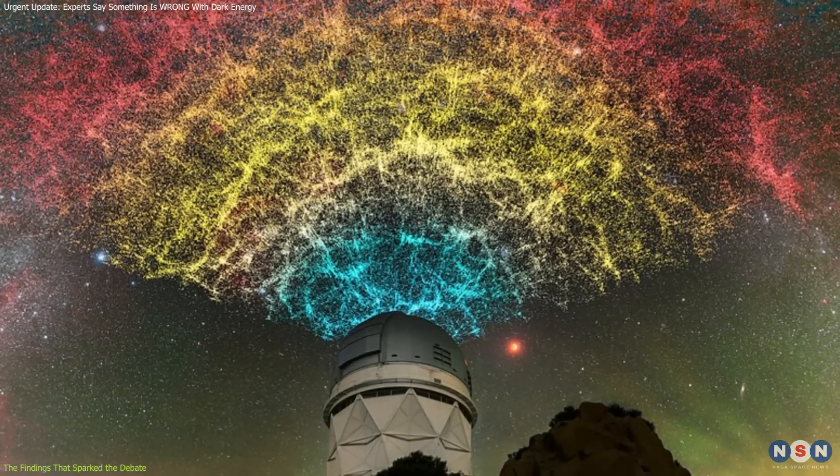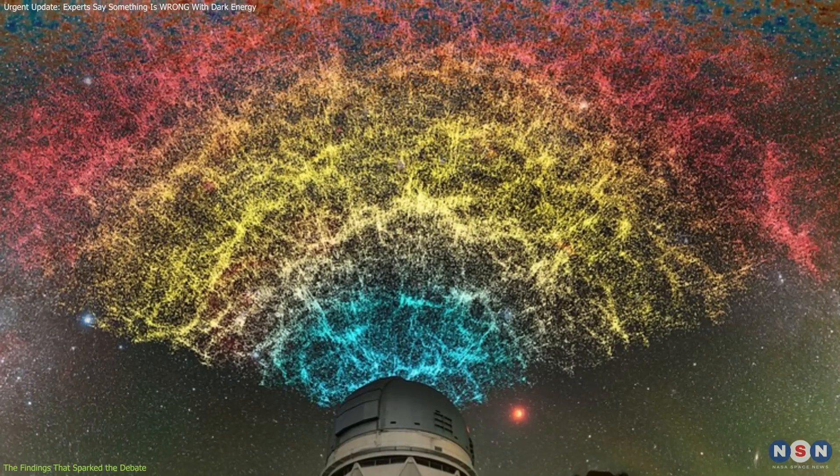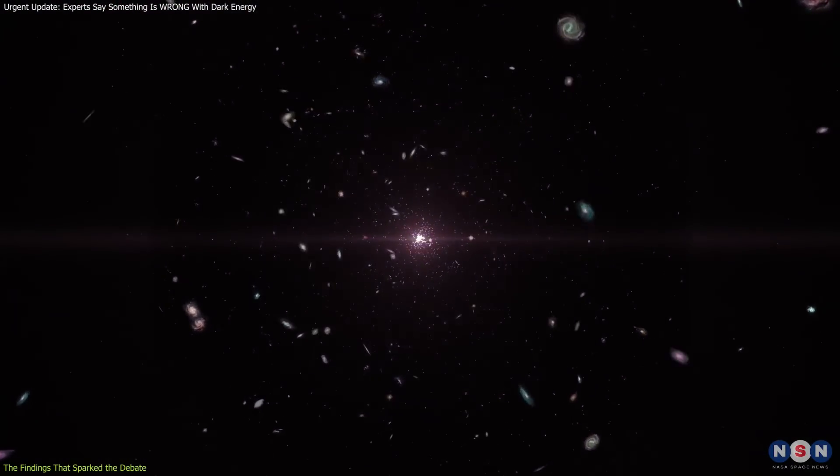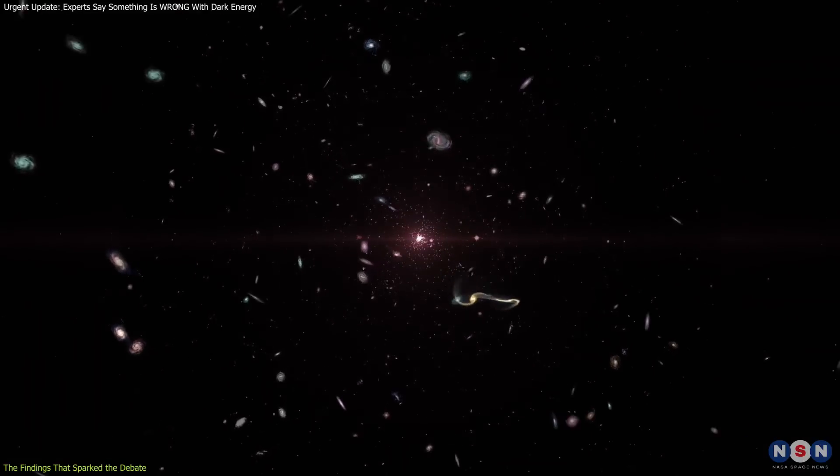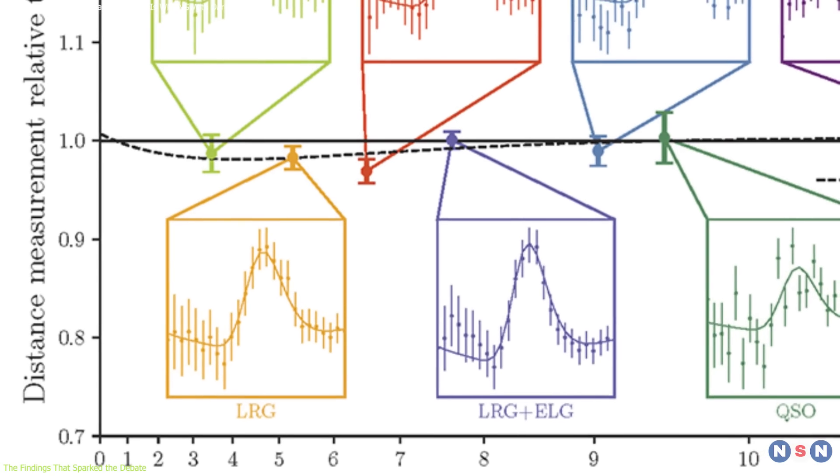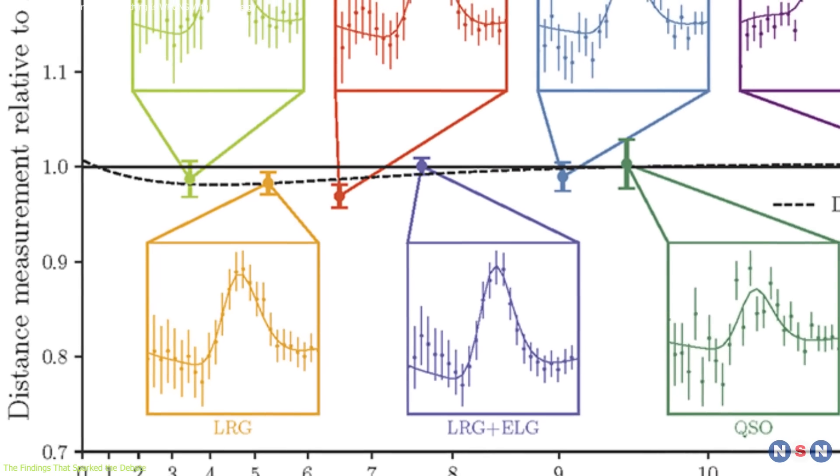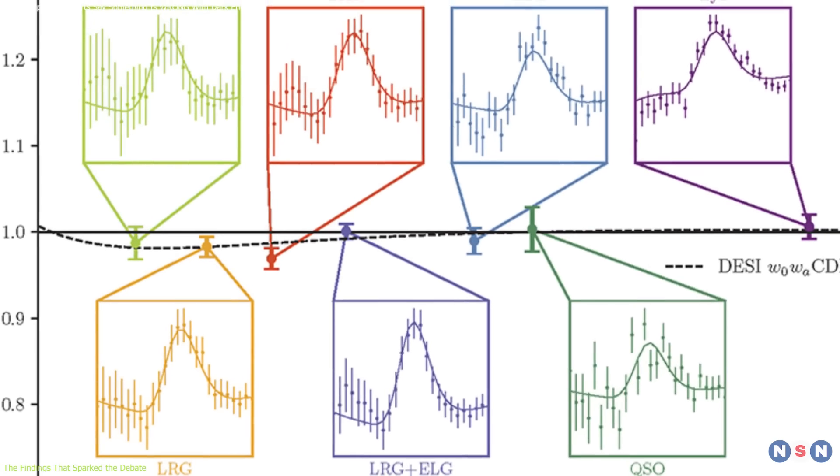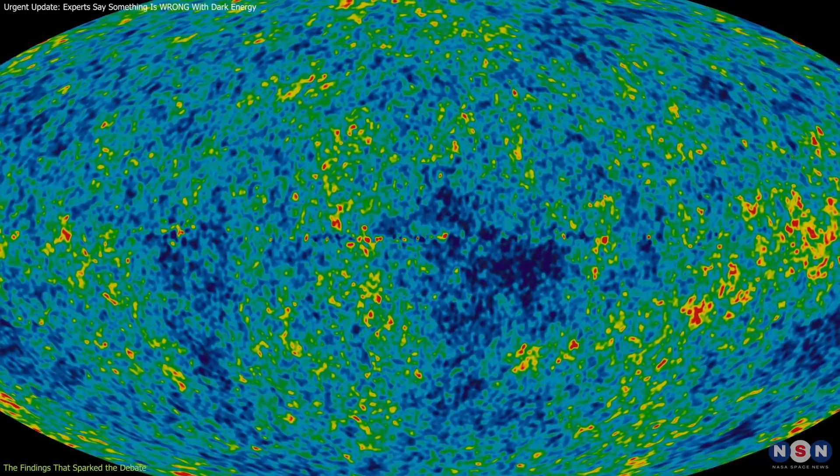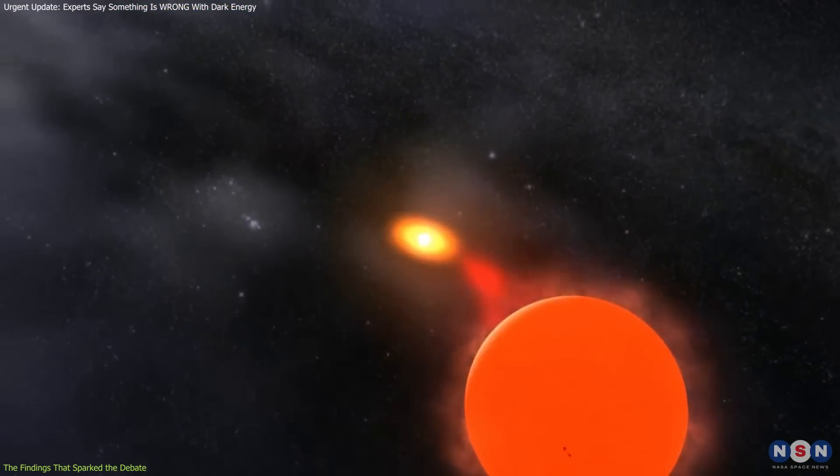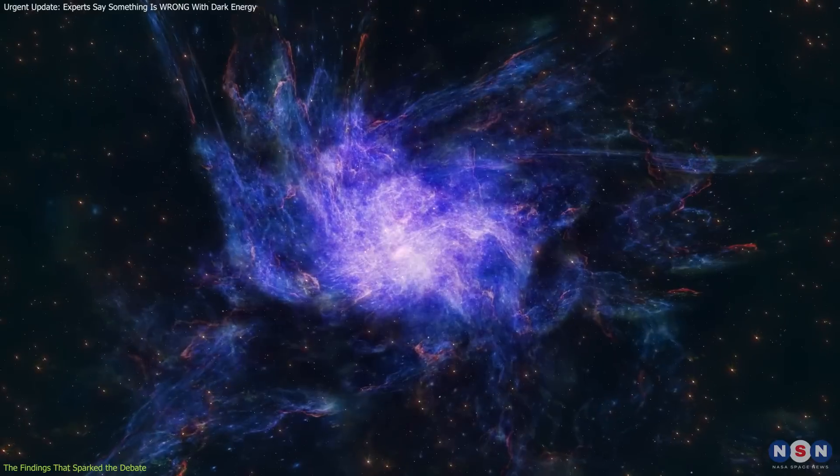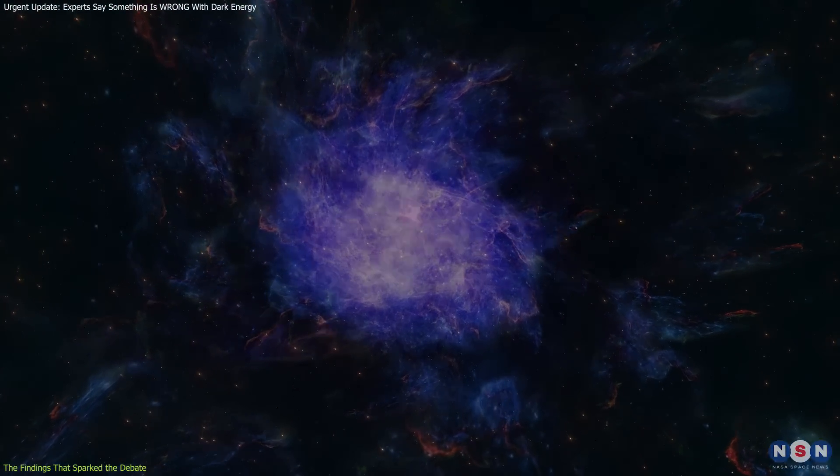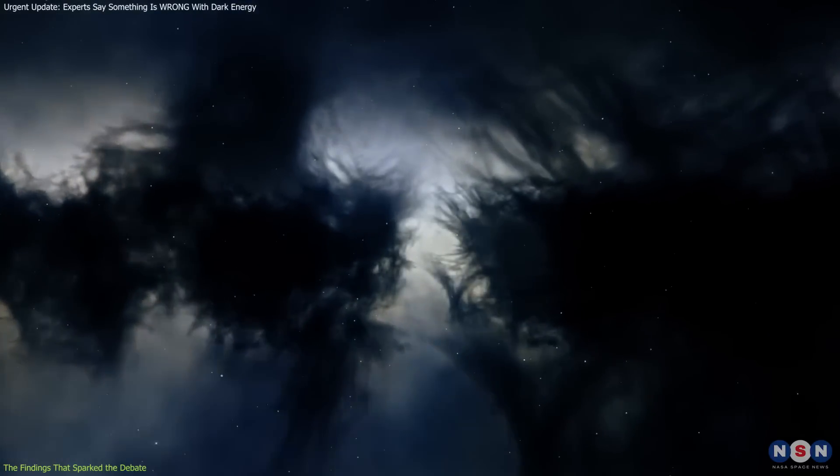The DESI survey uses an intricate 3D mapping technique to study galaxies' spectra and determine their distances and velocities. This allows researchers to pinpoint how the universe's expansion has evolved across billions of years. DESI's first-year results showed subtle deviations from predictions based on the Lambda CDM model. When combined with data from other sources, like the cosmic microwave background and Type Ia supernovae, the results diverged even more. These appealing hints suggest that dark energy might not be constant at all, a finding that could upend decades of cosmological theory.